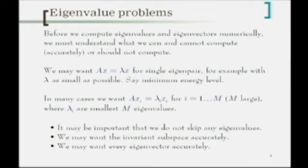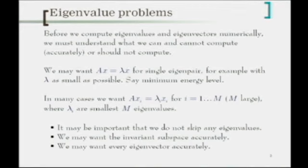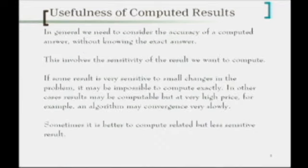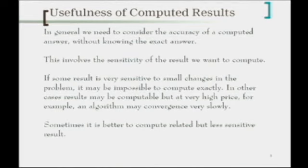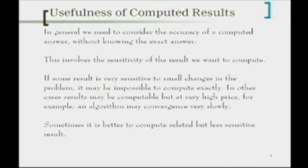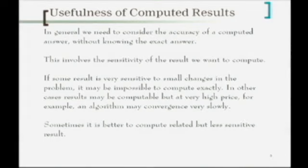You can compute a nice orthogonal stable basis for that space, but if you want the eigenvectors very accurately, you do care, and that can be quite hard. If it's sufficiently sensitive, my statement would be: probably you shouldn't try to compute it, because you're not going to get an accurate answer anyway — you may not be posing the right question. In general, we need to consider the accuracy of a computed answer without knowing the exact answer. This involves the sensitivity of the result we want to compute. If a result is very sensitive to small changes in the problem, it may be impossible to compute exactly, and it's important to recognize that.